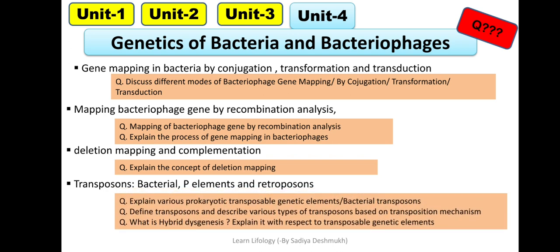Complementation also helps in mapping, as does deletion mapping. Then transposons have slightly twisted type questions with a vast variety of questions. Here you have to explain various prokaryotic transposable elements. Then describe various transposons based on transposition mechanism. There are types based on mechanism, which you have to explain. What is hybrid dysgenesis? Questions can be asked on hybrid dysgenesis. Explain it with respect to transposable genetic elements. That was all about the questions and syllabus of this paper.